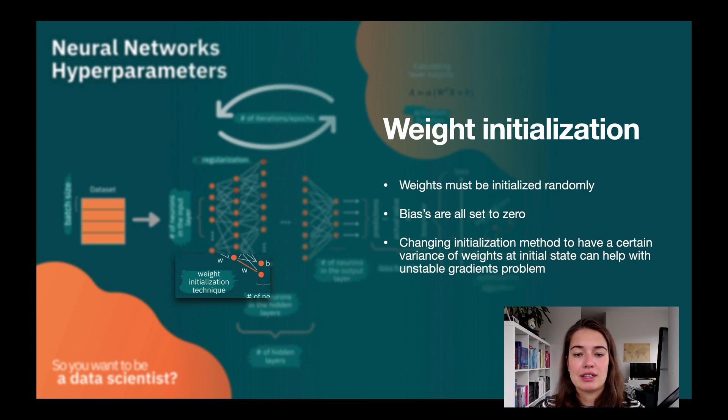One option is to still initialize the weights randomly, but the variance of this randomness is going to change. There are some details that we will talk about later. But just so you know, weight initialization is also a hyperparameter that you can set to deal with some of the problems that neural networks come with.